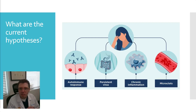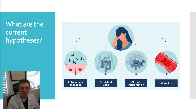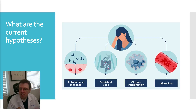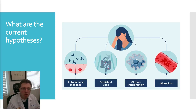So what are the current hypotheses? Now, these are hypotheses — they're not fact, they're not definite. These are thoughts of what can cause long COVID. One is autoimmune response. The next one is persistent virus — that is the virus still causing the problems. The third one is from chronic inflammation. And the fourth one is from microclots.